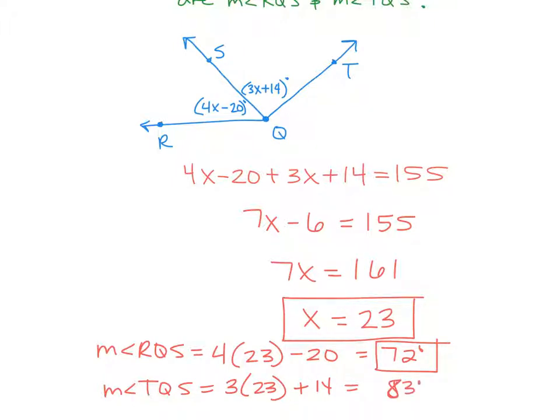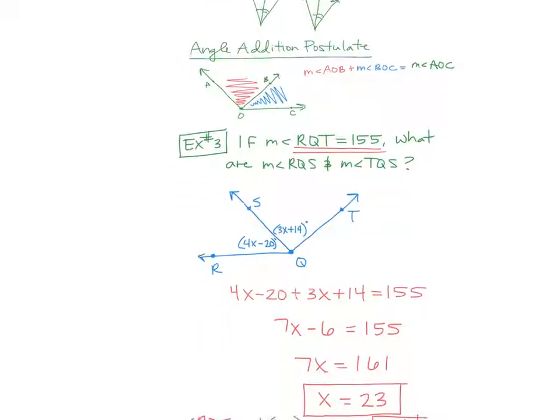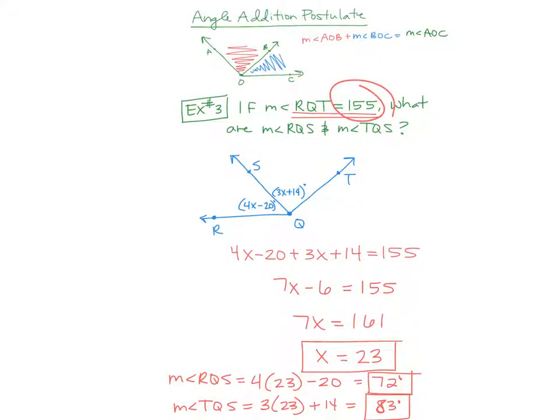And then the measure of angle TQS, again, substituting the 23. So 3 times 23 plus 14. So you have 3 times 23, 69 plus 14. So you get 83 for that one. So if you wanted to know the whole angle, which they told you at the beginning, but to check that you have the whole angle correct, add those together, you get 155, which is what they gave you up there. So then you know you got it right. Any questions on that?